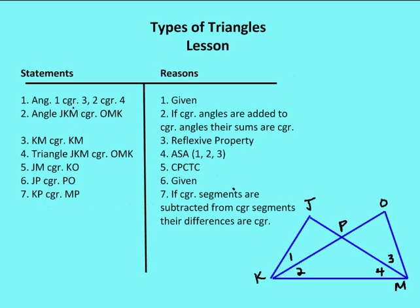Now let's do a proof using types of triangles. We have two triangles: JKM and OMK. I'm given that angle 1 is congruent to angle 3, and angle 2 is congruent to angle 4, and I want to prove that segment KP is congruent to MP. Let me mark up the diagram: angle 1 congruent to angle 3, angle 2 congruent to angle 4, and KM is congruent to itself.